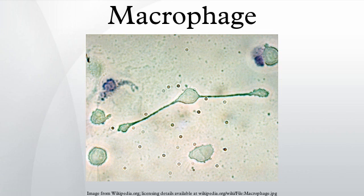The macrophages' main role is to phagocytize bacteria and damaged tissue, and they also debride damaged tissue by releasing proteases. Macrophages also secrete a number of factors such as growth factors and other cytokines, especially during the third and fourth post-wounding days. These factors attract cells involved in the proliferation stage of healing to the area. Macrophages may also restrain the contraction phase.